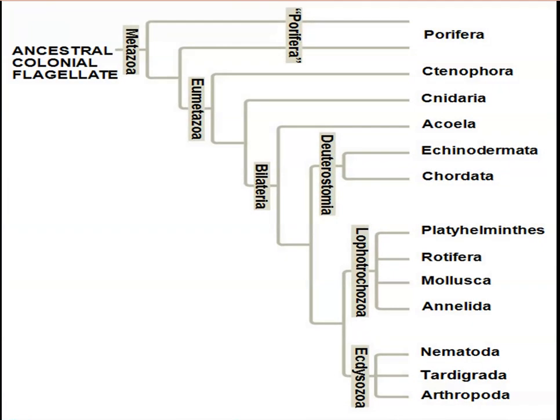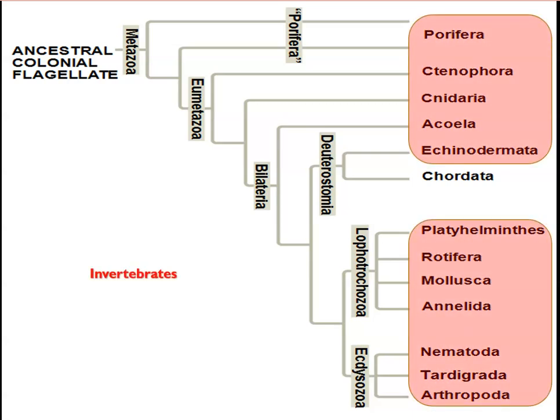When you look at the phylogeny of all animals, you see that the invertebrates encompass pretty much everything except for the chordates, which are the only vertebrates. We'll talk about them last in the semester. In lecture 1, we talked about Porifera, Ctenophora, Cnidaria, Acoela, and Platyhelminthes. Today we'll talk about some of the other groups in Lophotrochozoa: Rotifers, Mollusca, and Annelids.